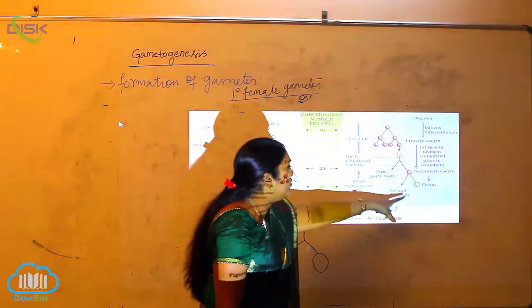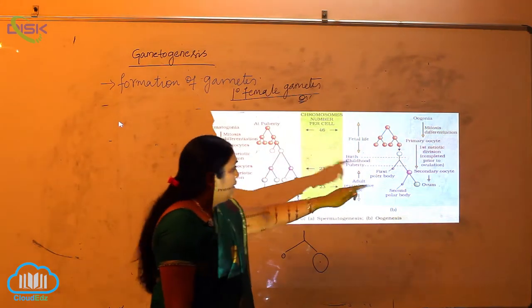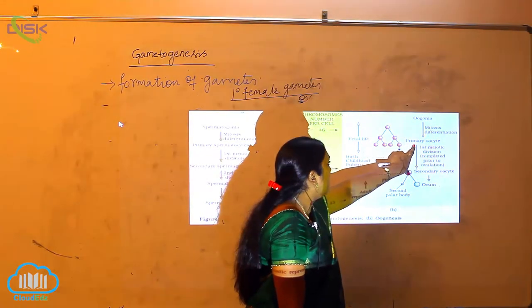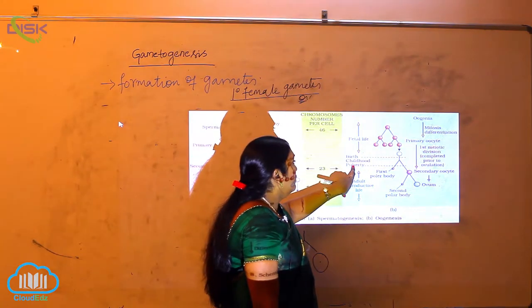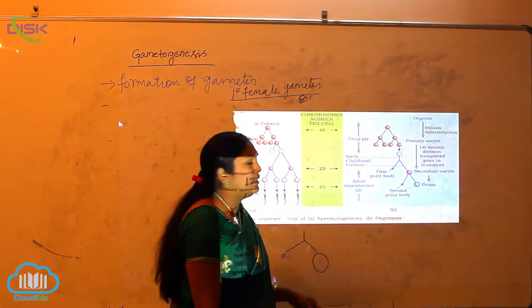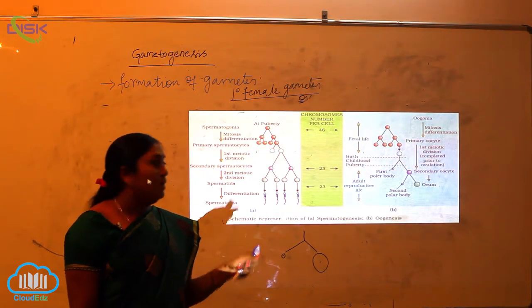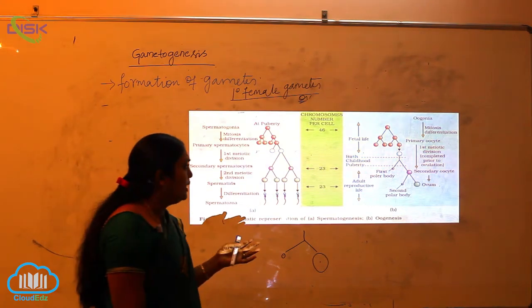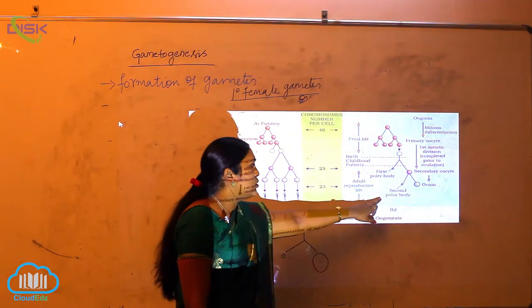The secondary oocyte further divides to form the ovum and the second polar body. During the process of oogenesis, when the primary oocyte is forming, the primary oocyte will stop its division when it reaches puberty. When the baby is in the mother's womb, the division will be mitotic. Later on, when the girl attends puberty or menarche, the meiotic division will occur, resulting in the formation of secondary oocytes and the second polar body.